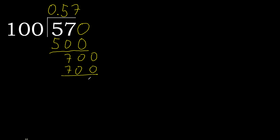Subtract 0, equals 0. Therefore finish. 57 divided by 100 equals 0.57.